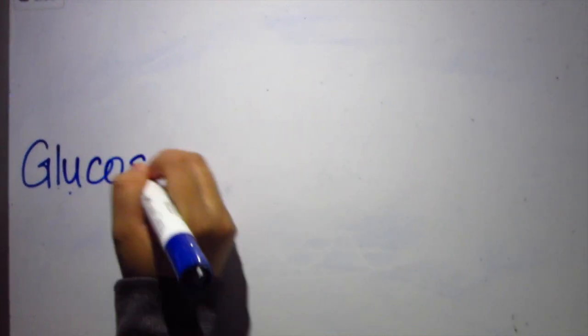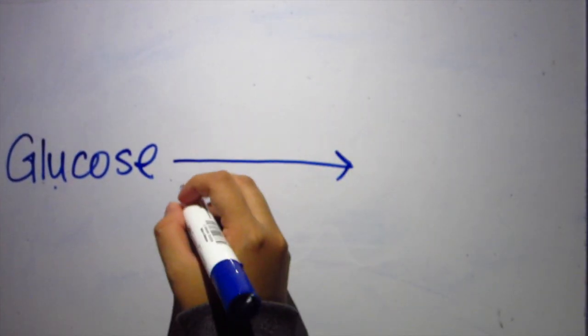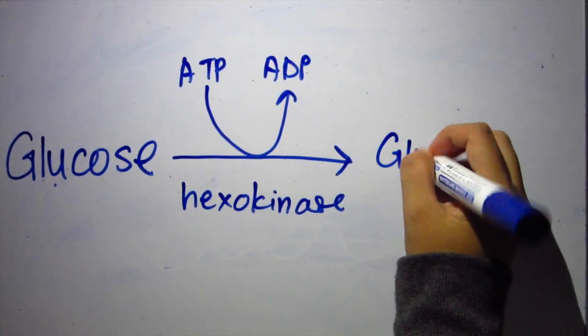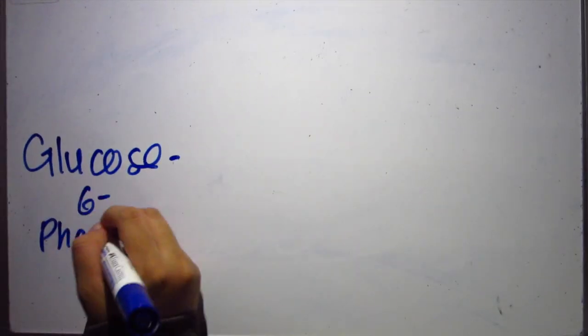This is the song about glycolysis. We first start off with glucose, with the aid of hexokinase and ATP. We will get glucose-6-phosphate.